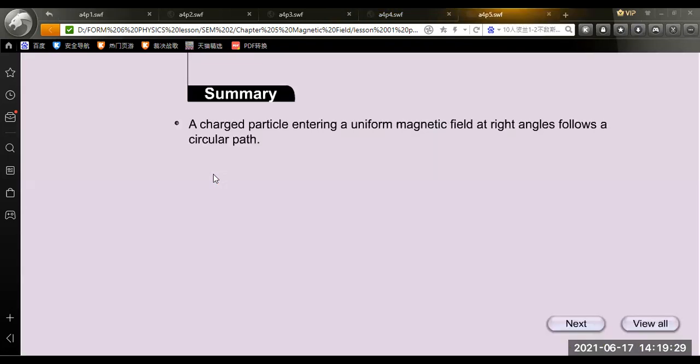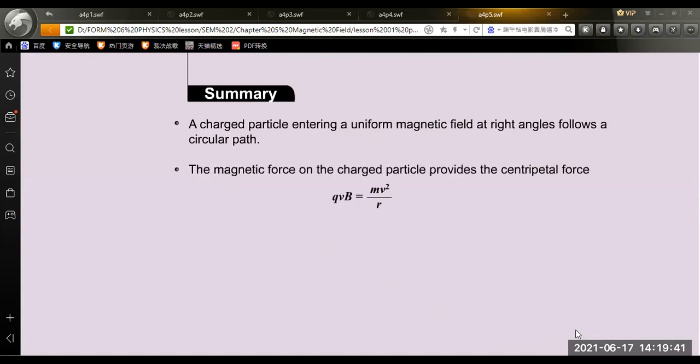Ladies and gentlemen, as the summary, a charged particle entering a uniform magnetic field at right angles follows a circular path. The magnetic force on the charged particle provides the centripetal force, where the magnetic force F equals qvB sin theta, where theta is equal to 90 degrees. It's equal to the centripetal force Fc, which is equal to mv squared over r.